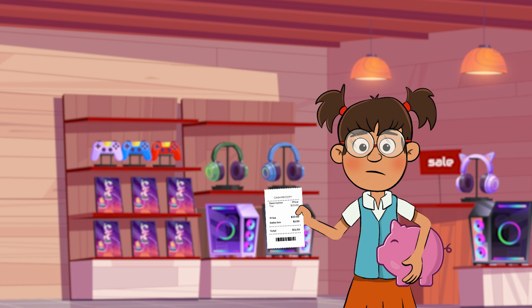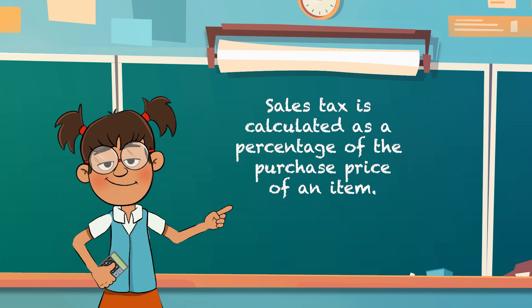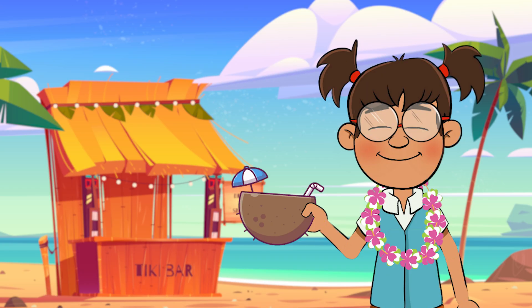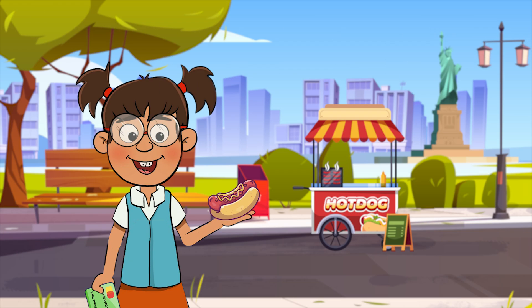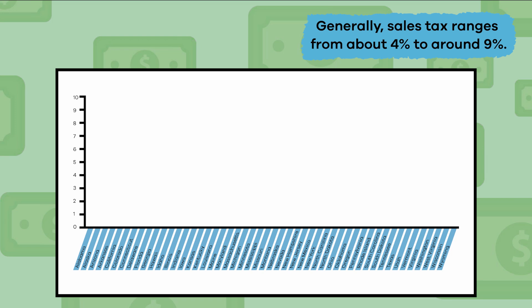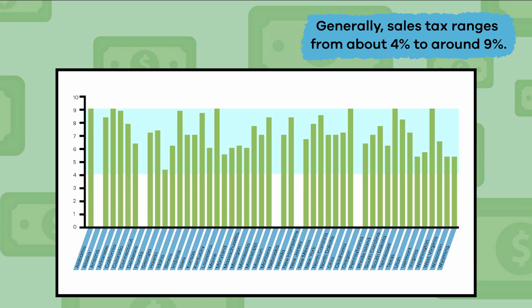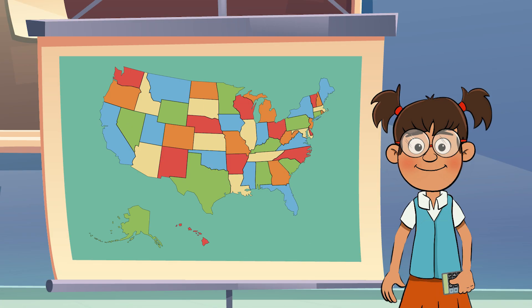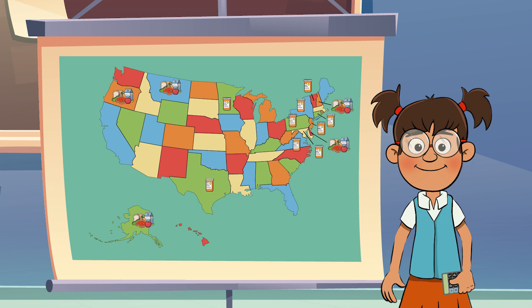Now that we know what sales tax is, let's talk about how it is determined or calculated. Sales tax is calculated as a percentage of the purchase price of an item, and this rate changes depending on what state you live in and what item you are purchasing. Generally, sales tax ranges from about 4% to around 9%. And sometimes, depending on where you live, items like groceries and some prescription medications are exempt from sales tax.